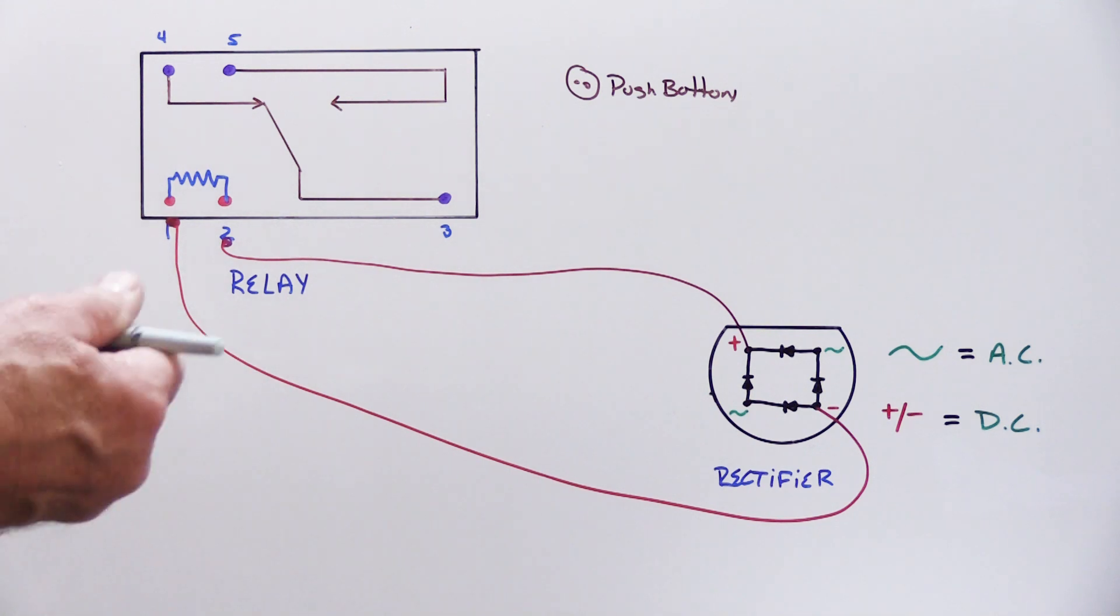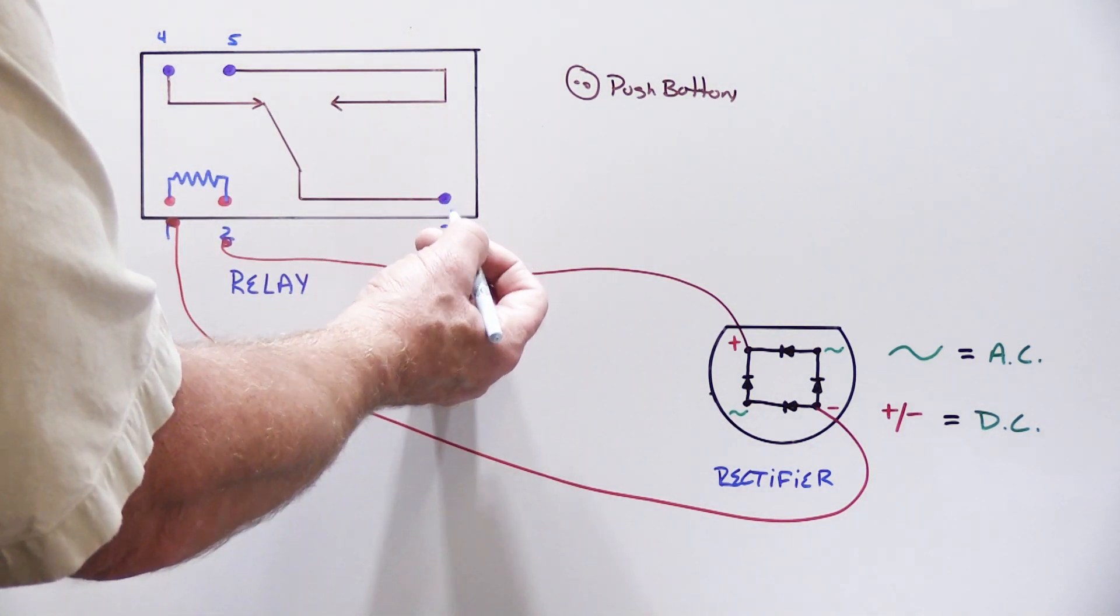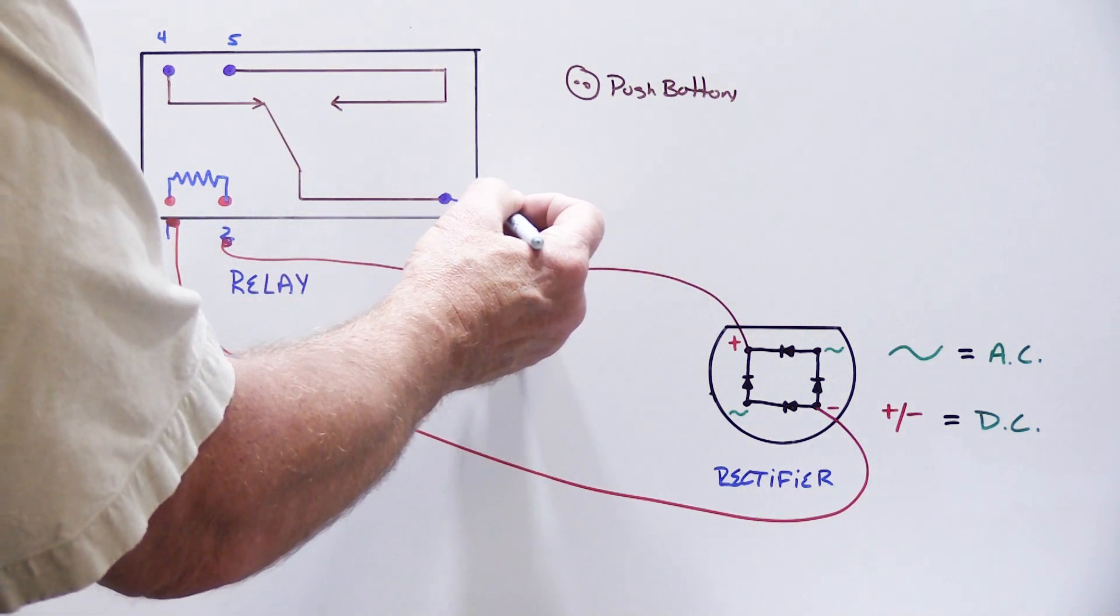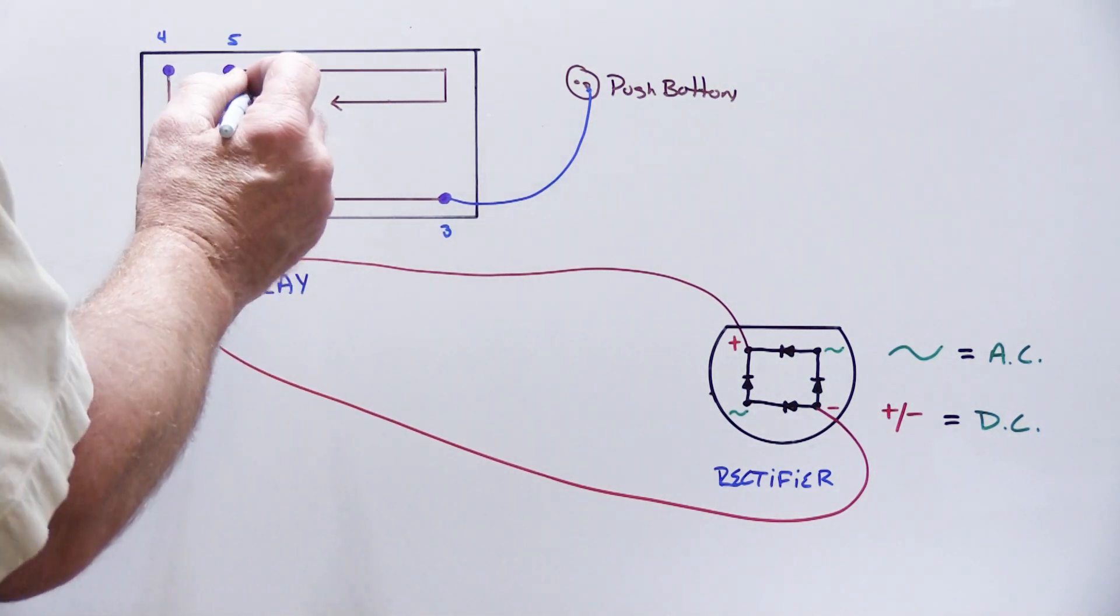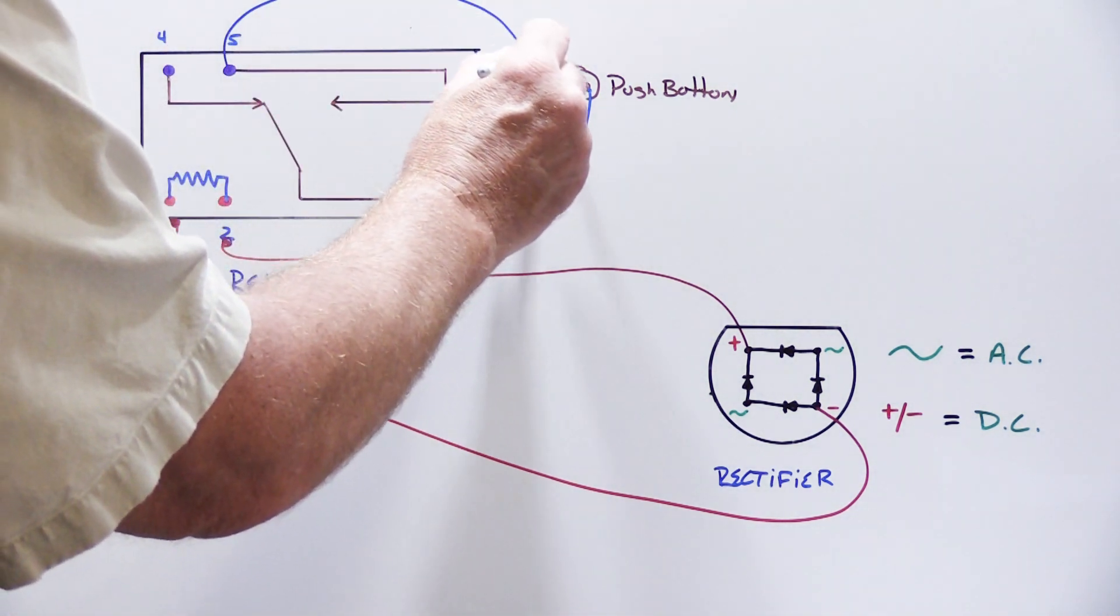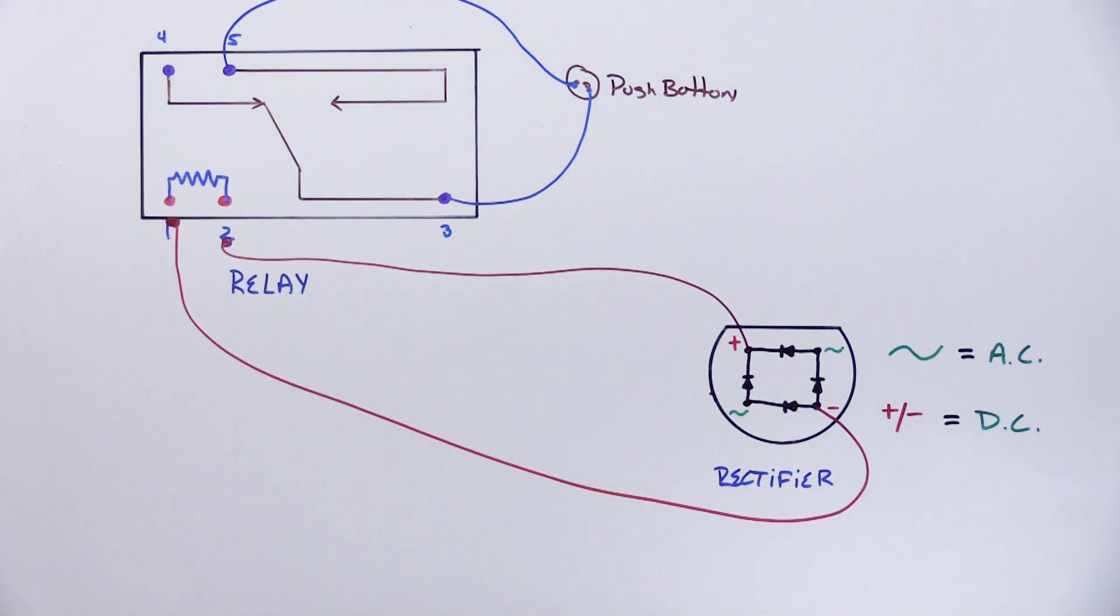So we're going to do those in blue and all we're going to do is we're going to take one wire from contact number three, the common contact of the relay. I'm going to take it around and connect it to one screw on the back of the push button. And then we're going to take another wire from terminal number five and we're going to take that around and connect it to the other screw on the back of the push button. Now our circuit is complete.